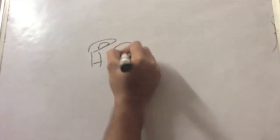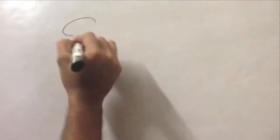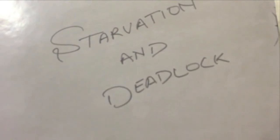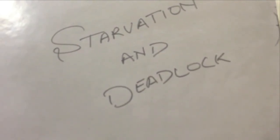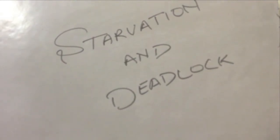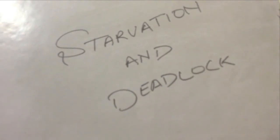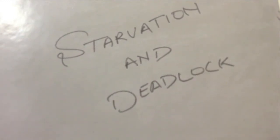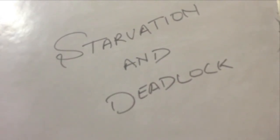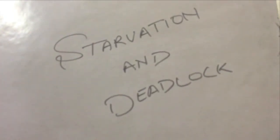There are a few problems associated with this situation: starvation and deadlock. Starvation is a situation where one philosopher never gets the chance to eat and eventually starves and dies. Deadlock is a state where one philosopher is waiting for others to complete eating, and the others in turn are waiting for the first one, forming an unending cycle.